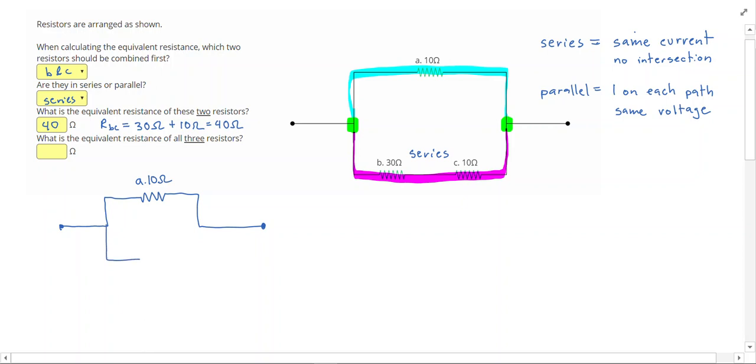But now down here I'm going to combine those two into one. So instead of having this path that had two resistors on it, I just have one resistor there. That's resistor BC and it is a 40 ohm resistor.